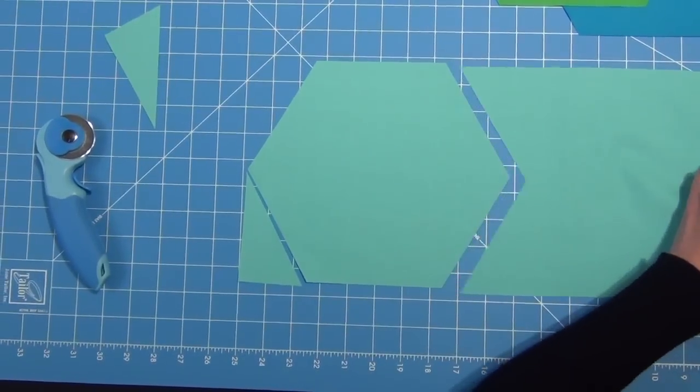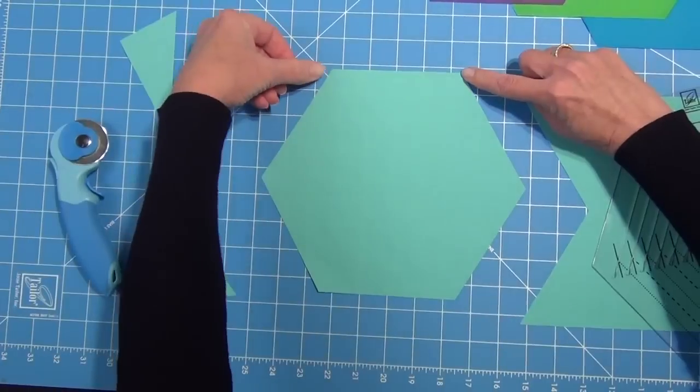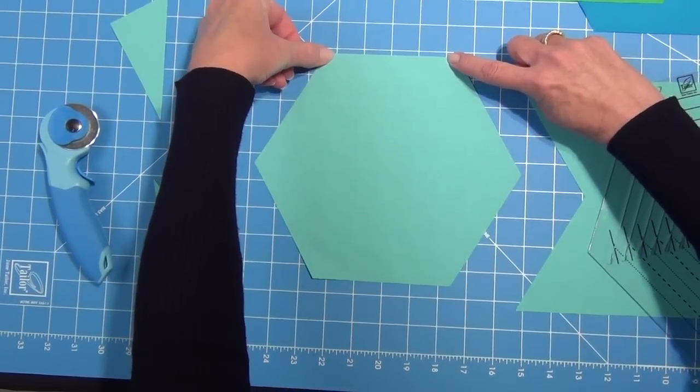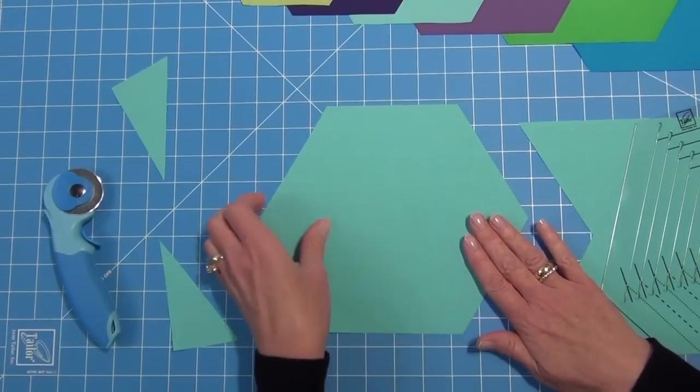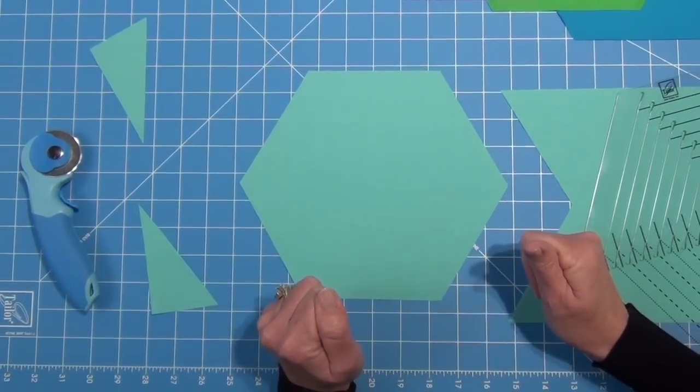Now when I take this fabric away, you're going to see that I have a perfect hexagon. If my seam allowances were taken into consideration here and here, this dimension would be perfect 4½ inches. Now I've cut through one layer of fabric, but you can cut through several layers, up to 8 and make several hexagons at one time.